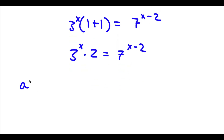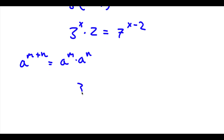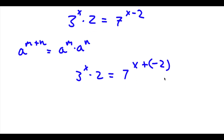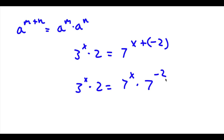Now if I have something in the form a to the power of m plus n, this is equal to a to the power of m times a to the power of n. So in this case 7 to the power of x minus 2, we can rewrite as 7 to the power of x plus negative 2. So now 3 to the power of x times 2 is equal to 7 to the power of x times 7 to the power of negative 2.